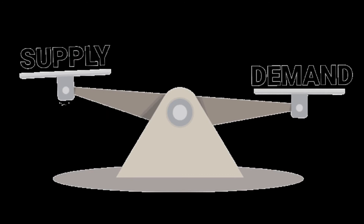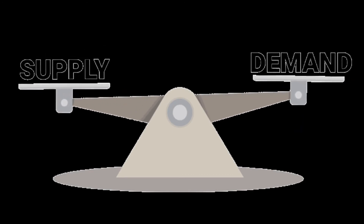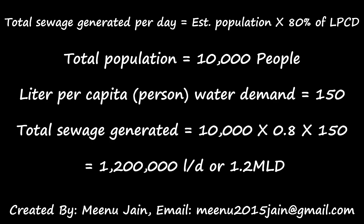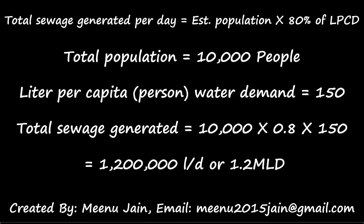Assuming water supply equals water demand, if we consider a total population of 10,000 people, total sewage generated per day will be 10,000 multiplied by 150 LPCD multiplied by 0.8. So total sewage generated for 10,000 people will be 12 lakh liters per day, or dividing by 10 to the power of 6, that is 1.2 MLD.